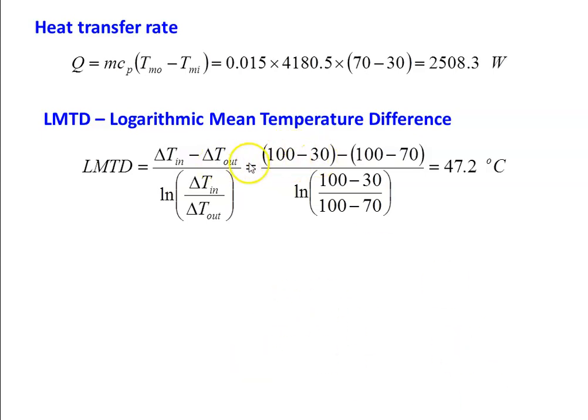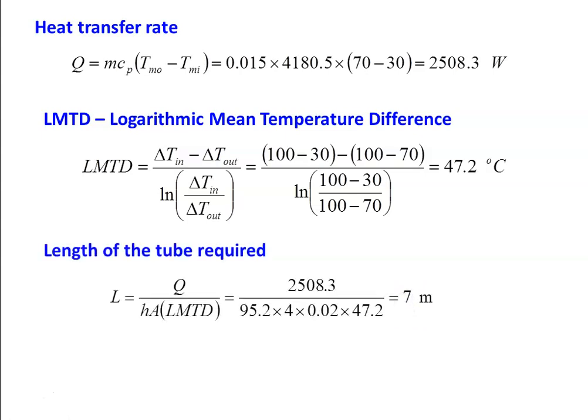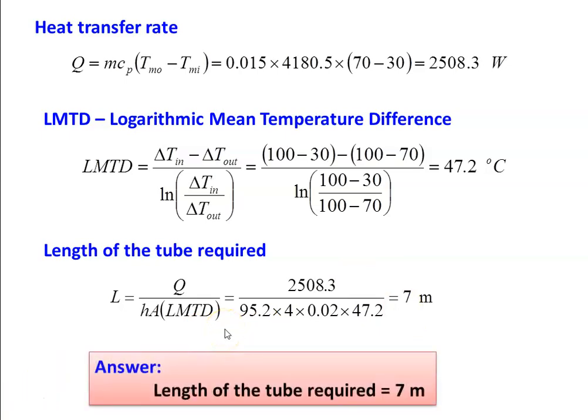Substituting: LMTD = (70 − 30) / ln(70/30) = 47.2°C. The tube length required: L = Q / (h × Perimeter × LMTD) = 2508.3 / (95.2 × 4 × 0.02 × 47.2) = 7 m. The answer: length of the tube = 7 meters.